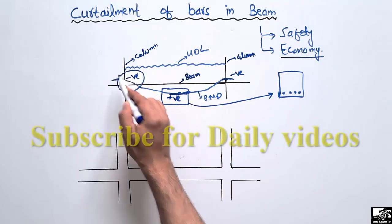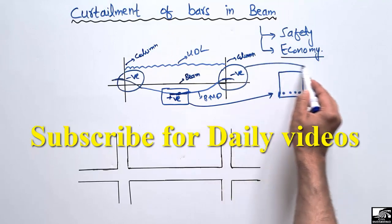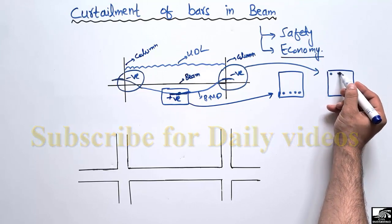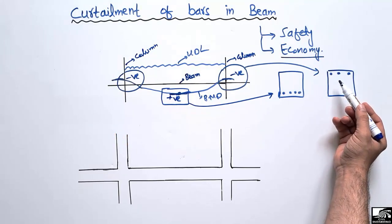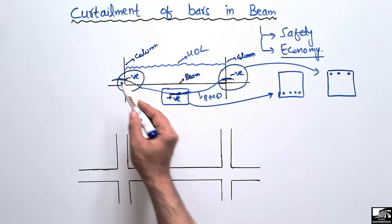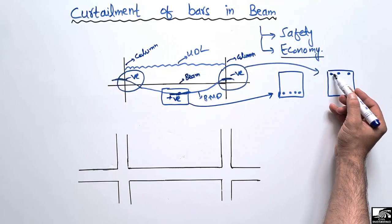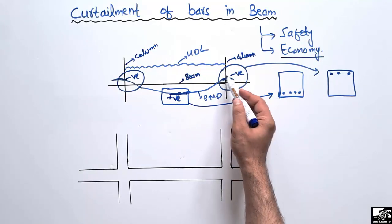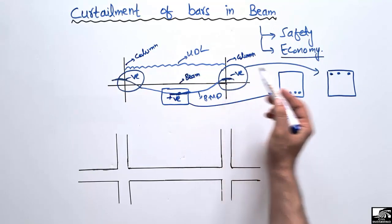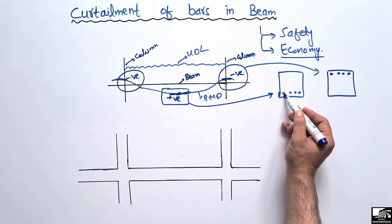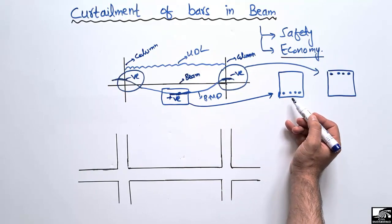At the column sections where there is negative bending moment, most of the bars will be provided at the top of the beam in order to resist the tensile stresses at the top section. At the column portion there will be maximum negative bending moment at the top of the beam, so we provide most of the steel bars on top. In summary: for negative bending moment we provide steel bars at the top, and for positive bending moment we provide steel bars at the bottom of the beam section.